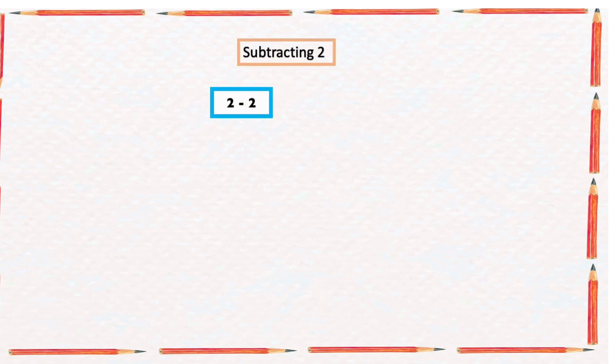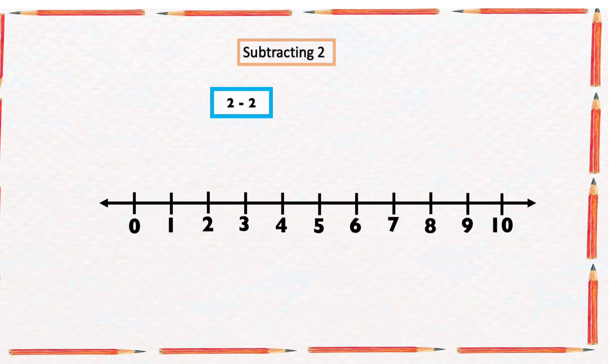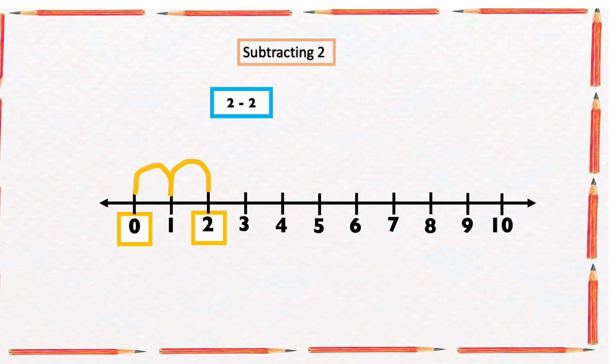Let's look at one more example: 2 minus 2. Let's find out what that gives us. With our number line, we're going to start from 2 and count two numbers backward: one, two. So 2 minus 2 will give us zero.